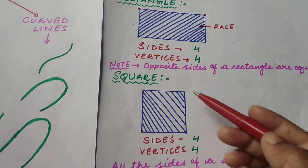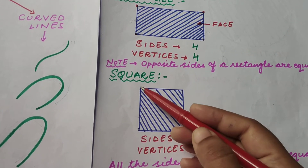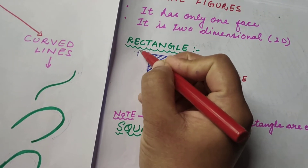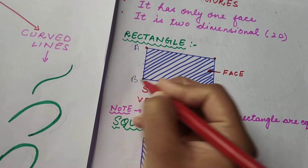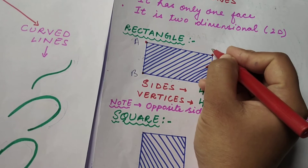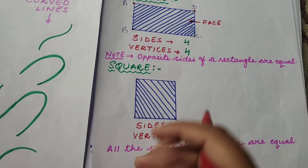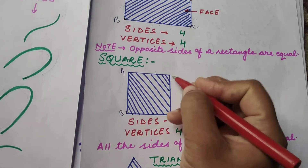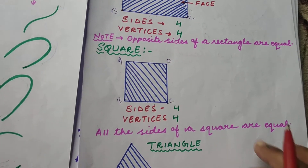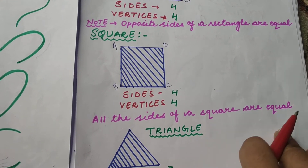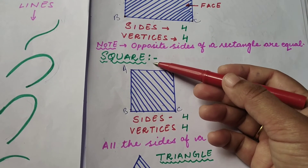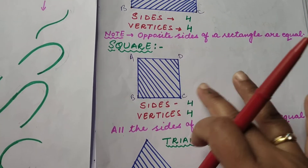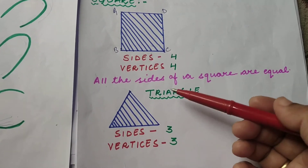All sides are equal. Vertices: how many vertices are there? One, two, three, four. We can give names to these vertices — A, B, C and D. So this is a square. All the sides of a square are equal: if one side is 4 cm, all will be 4 cm; if one is 2 cm, all will be 2 cm.